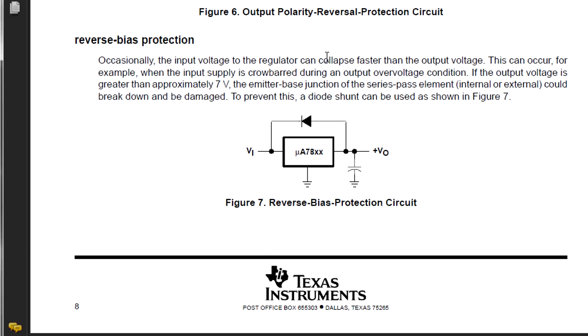And this is like a Darlington configuration on the output here. And this is specifically the Texas Instruments data sheet for the 78XX series and it specifically tells you reverse bias protection. Occasionally, the input voltage to the regulator can collapse faster than the output voltage. This can occur, for example, when the input supply is crowbarred during an output over voltage condition. If the output voltage is greater than approximately 7 volts, the emitter base junction of the series pass element internal